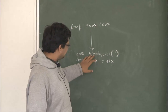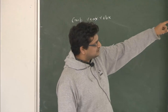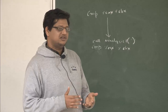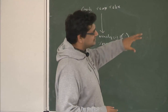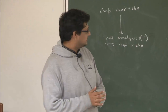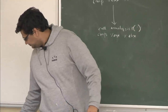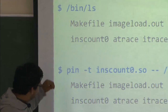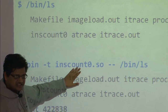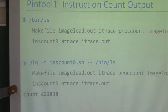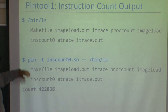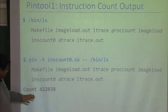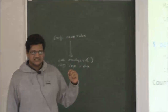The analysis routine here increments the counter. PIN can perform compiler optimization and may inline this simple function. When we run the 'ls' command with PIN using this tool (inscount0.so), we get the normal output of ls along with the PIN tool's output: the total number of instructions that the ls command executed.